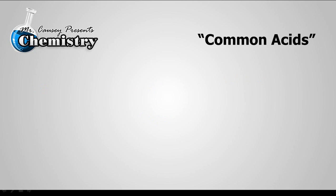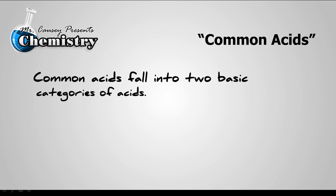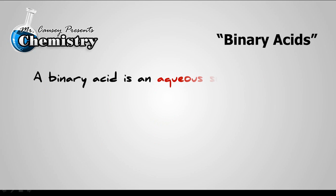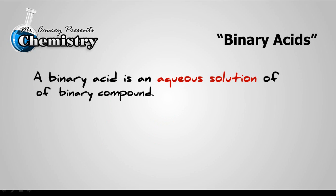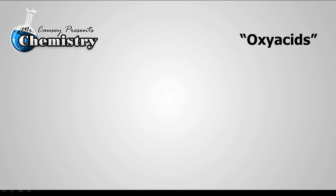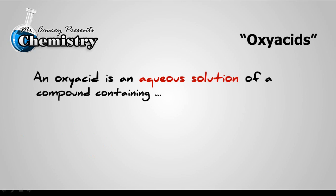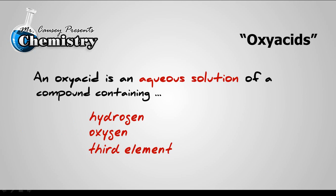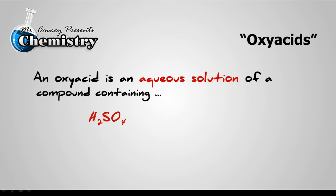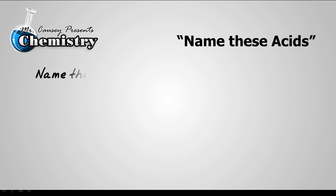Common acids fall into two basic categories: binary acids and oxy acids. Binary acids are aqueous solutions of a binary compound that produce hydrogen ions — examples include hydrogen chloride, hydrogen fluoride, or hydrogen cyanide. Oxy acids are aqueous solutions of a compound containing three things: hydrogen, oxygen, and a third element of some kind — and this involves polyatomic ions. Examples would be hydrogen sulfate or hydrogen bromate. Let's name some acids.